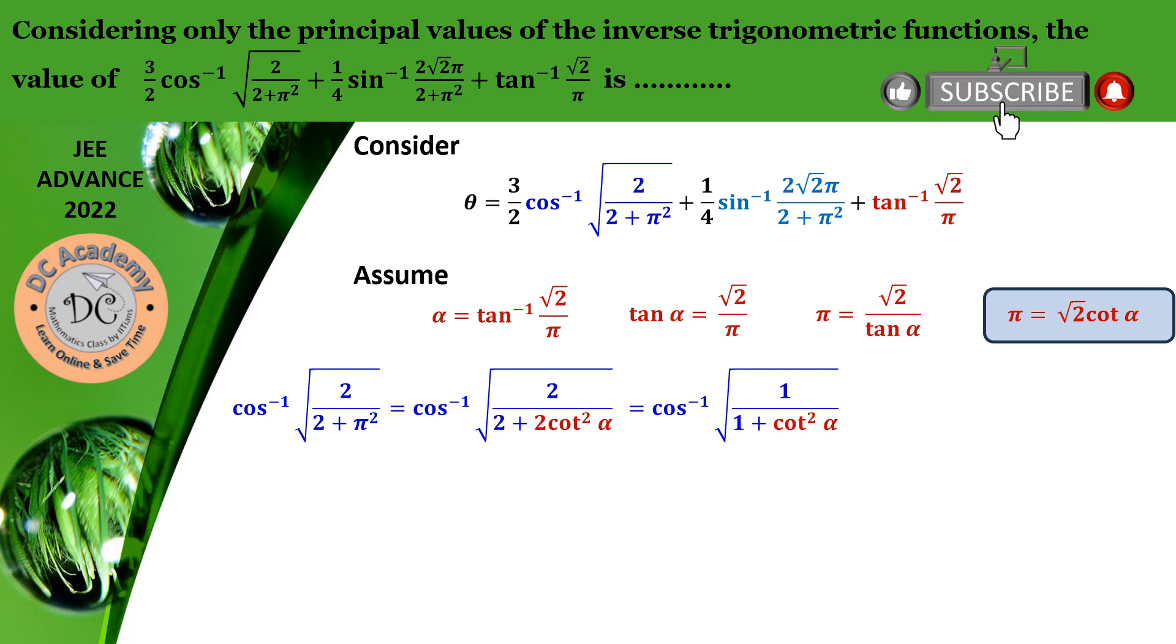Therefore, 1 plus cot squared alpha will become cosec squared alpha, giving me cos inverse of 1 by cosec alpha, which is sin alpha. So it will be cos inverse of sin alpha. Now, sin alpha can be easily written as cos of pi by 2 minus alpha. As we are talking about the principal values, these values will be reduced to pi by 2 minus alpha.